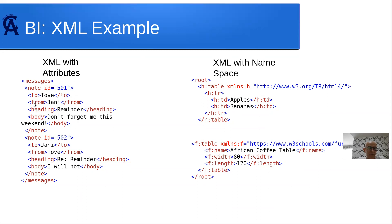For example: Jenny is sending a message to Tov, the heading is 'Reminder', and the body is 'Don't forget me this weekend.' So the structure is: messages containing notes, each note having children like 'to', 'from', 'heading', and 'body'. We have two notes here — two messages. One is from Jenny to Tov. I can write whatever I want — this is just the structure I decide. The structure is consistent and that's how we want to keep it.